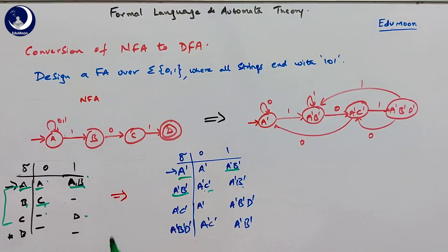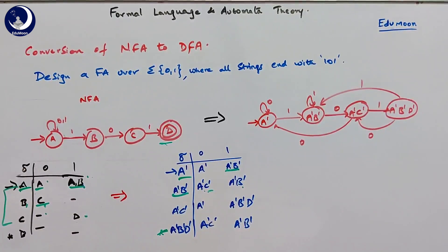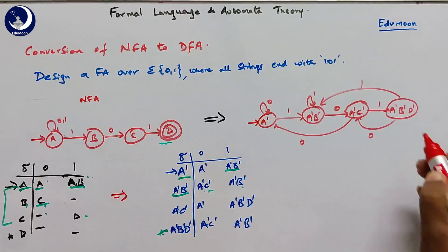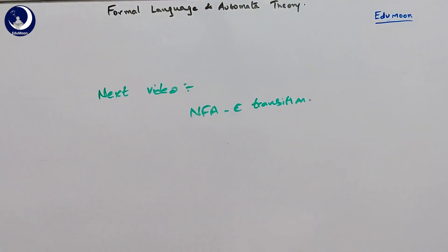The final state in the original NFA is D. From the DFA table obtained, we check which states contain D and make all of those final states in the DFA — any combination containing D becomes a final state. This is how we convert an NFA to a DFA, accepting strings ending with 101. In the next video, we will cover NFA with epsilon transitions — reading an empty string — and how to convert that to a DFA. Thank you all.